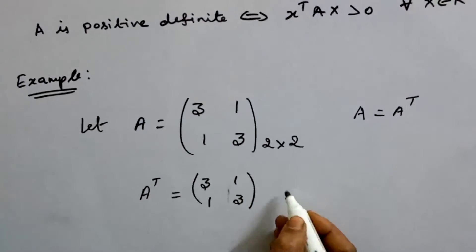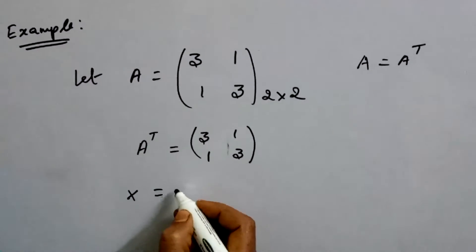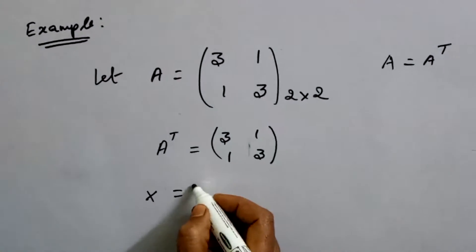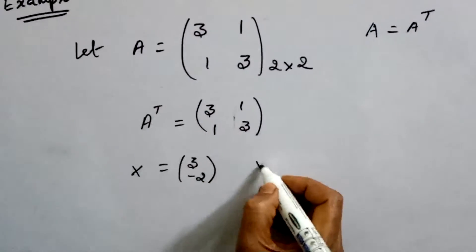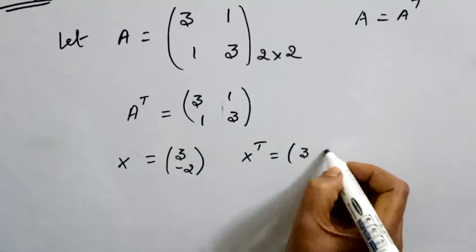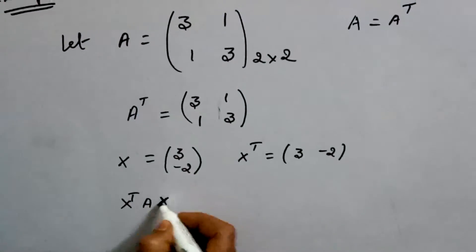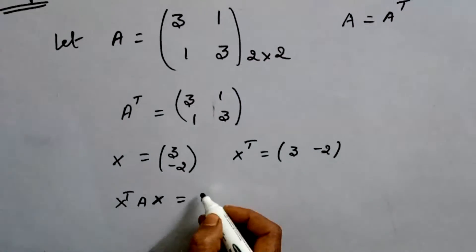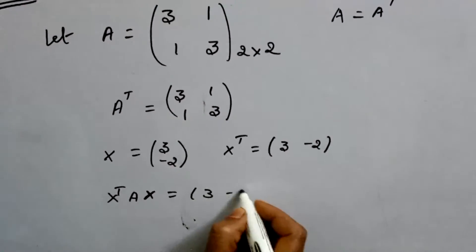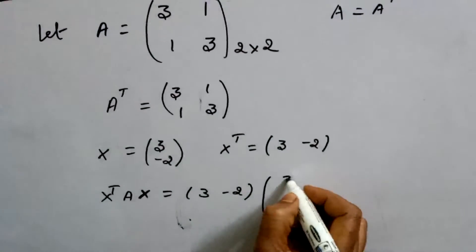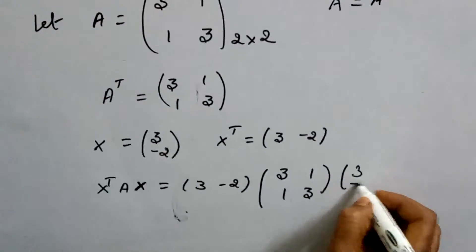We choose a 2 by 2 matrix, and we choose a column matrix x. We choose x equal to [3, -2]. If we choose x-transpose as [3, -2], then we check x-transpose Ax. We check the product: first x-transpose [3, -2], then A = [3,1; 1,3], then x = [3, -2].